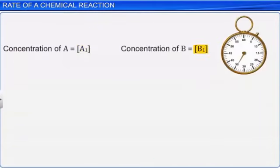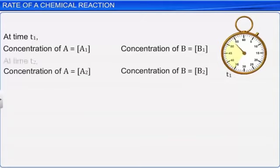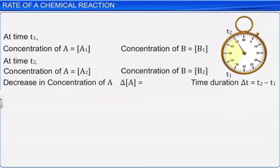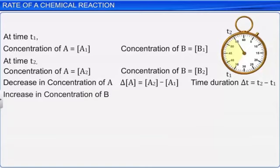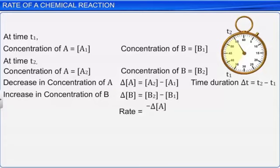Let A1 and B1 be the concentrations of A and B respectively at time T1, and A2 and B2 be their concentrations at time T2. The decrease in the concentration of reactant A, delta A, during time interval delta T equal to T2 minus T1, is given as A2 minus A1. Similarly, the increase in the concentration of product B, delta B, is given as B2 minus B1 during time interval delta T. Using the definition of rate of chemical reaction, we get the rate of the given reaction as the decrease in concentration of A, which is minus delta A divided by time interval delta T.